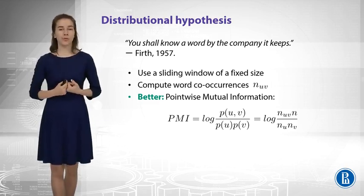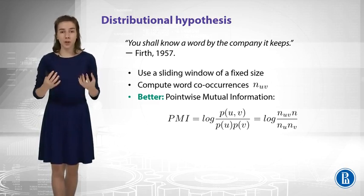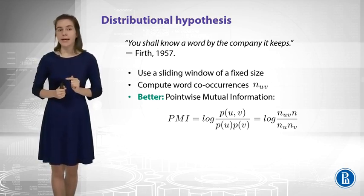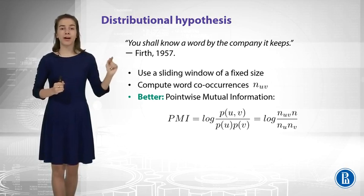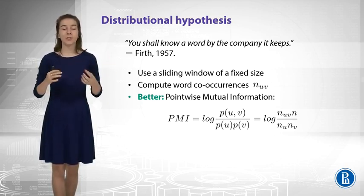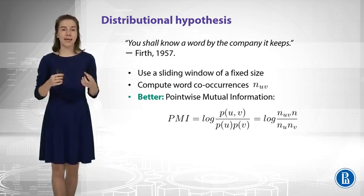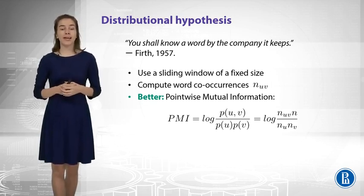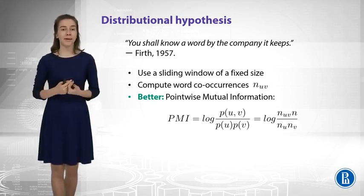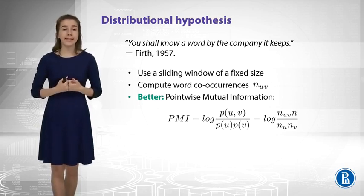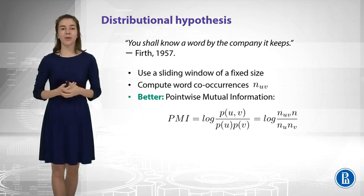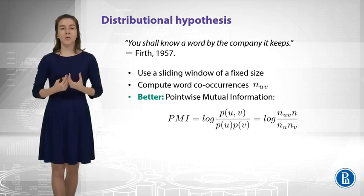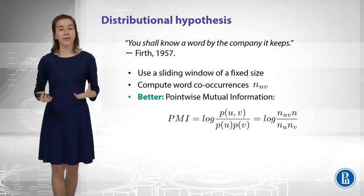If you look at the formula, in the numerator you have the joint probability of the words, and in the denominator you have the joint probability in the case that the two random variables are independent. So if the words were independent, you could say that probability factorizes — the fraction would equal one. In the case of dependent words that co-occur much more than expected, you will get something greater than one. This is the intuition of PMI: it measures whether the words co-occurred randomly or are really related.